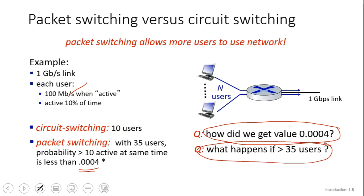That will be your homework. You have to research first how we got 0.004, and what happens if you have the same configuration — 1 gigabit per second link — with a packet-based switching.